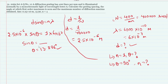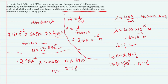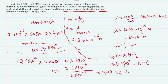For maximum diffraction order, sin θ = 1 at θ = 90°. So n_max = d/λ = 2.5×10⁻⁶ / 6×10⁻⁷ = 4.17. Since n must be a whole number, the maximum number of diffraction maxima is 4. This is the required answer.